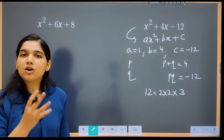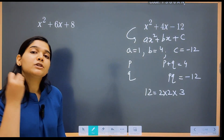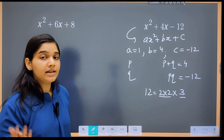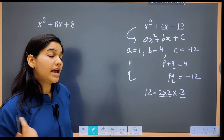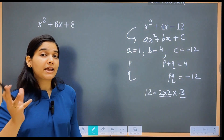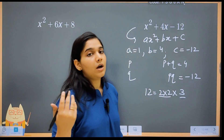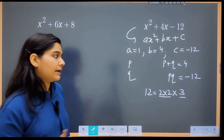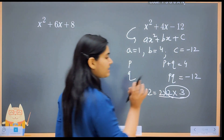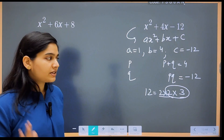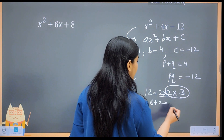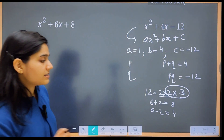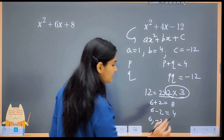Prime factorization of 12 gives 2 × 2 × 3. Now finding a combination: 4 × 3 = 12, but 4 + 3 = 7 ✗ and 4 − 3 = 1 ✗. Trying 6 and 2: 6 × 2 = 12 ✓, 6 + 2 = 8 ✗, but 6 − 2 = 4 ✓. So since the product must be −12, we use +6 and −2, because 6 × (−2) = −12 and 6 + (−2) = 4 ✓. So p = 6 and q = −2.